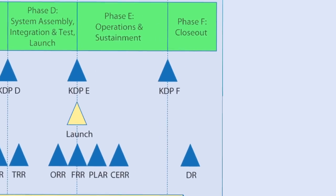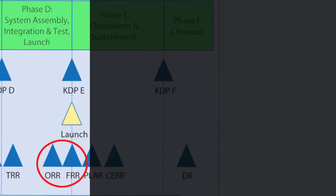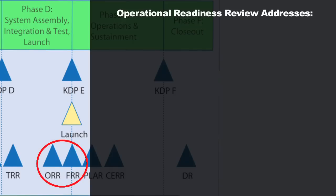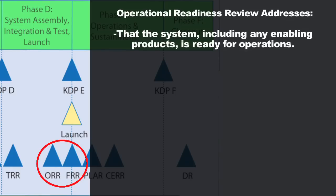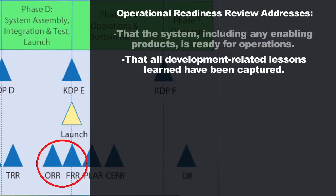The primary technical review in Phase D is the Operational Readiness Review, and there's also a Flight Readiness Review. At the Operational Readiness Review, the technical review team assesses that the system is matured, all enabling products for operations have been developed, and you're ready to enter the operations phase. They also confirm that all lessons learned from the development phase have been captured and passed on to the operations team and to developers of other satellites.